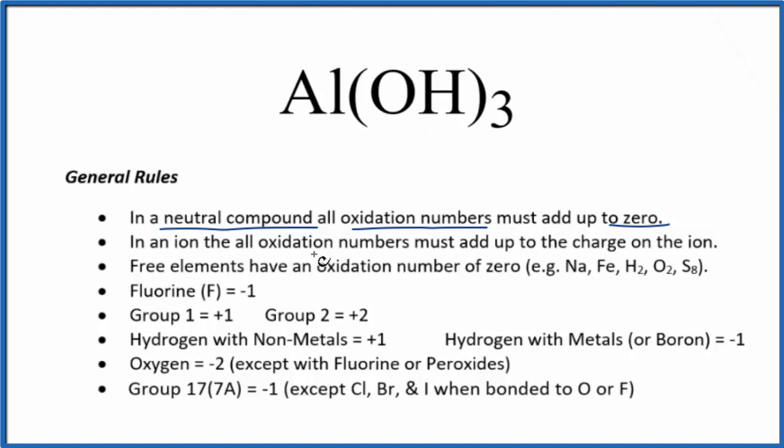There's two ways we could do this. First, we could look and see oxygen. That has an oxidation number of -2, except when it's bonded to fluorine or in peroxides. So -2 for the oxygen.